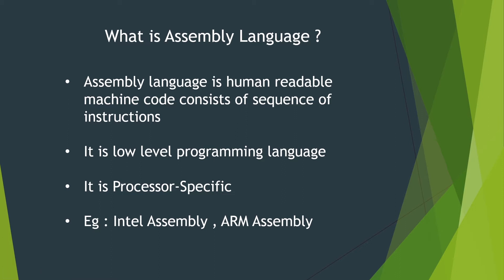It is the lowest-level programming language that a human can understand. Beyond this, programs are converted into binary — absolute zeros and ones. We cannot write code in absolute zeros and ones, which is why assembly is considered the lowest-level programming language.